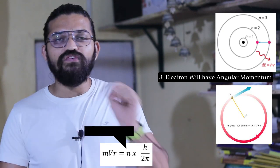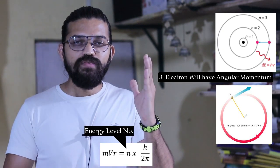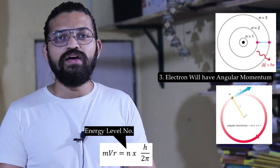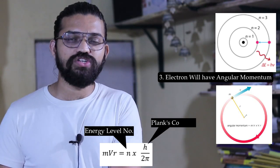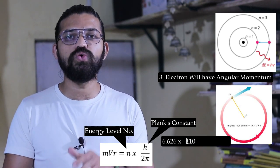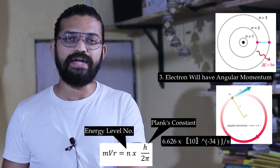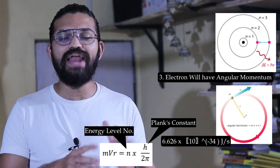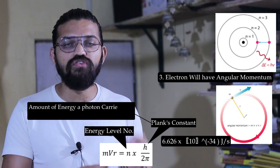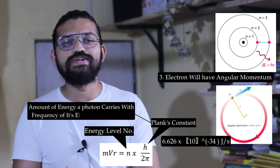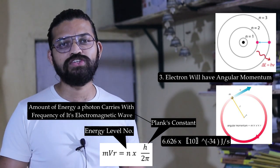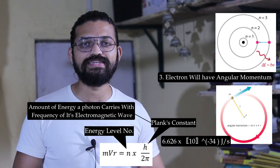The value of Planck's constant is 6.626 × 10⁻³⁴ joules per second. Planck's constant represents the amount of energy a photon carries with the frequency of its electromagnetic wave. This constant is named after physicist Max Planck.